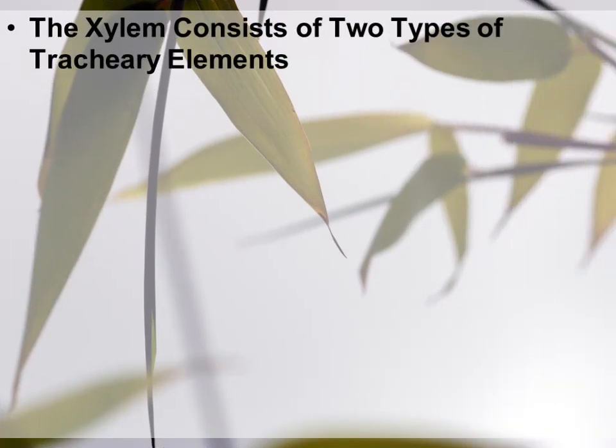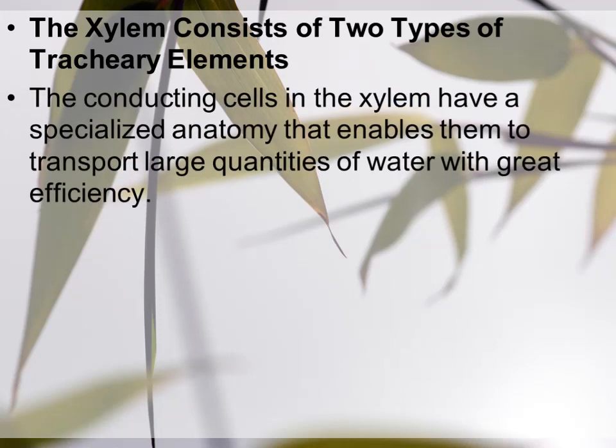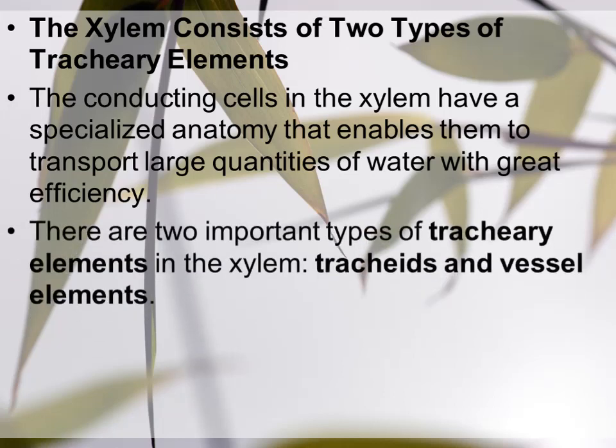The xylem consists of two types of tracheary elements. The conducting cells in the xylem have a specialized anatomy that enables them to transport large quantities of water with greater efficiency. The specialized structure and arrangement of xylem cells makes the xylem tissue fully capable of maximum water transport.